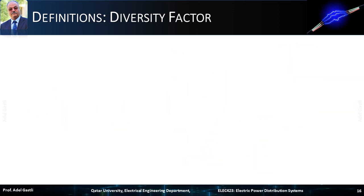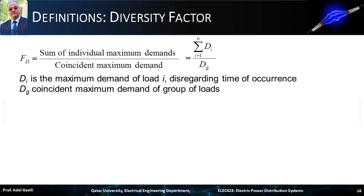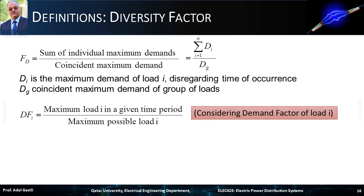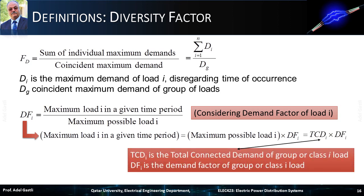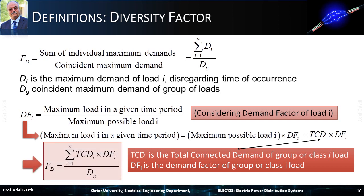In summary, the diversity factor is calculated as the ratio of the sum of individual maximum demands to the coincident maximum demand, where DI is the maximum demand of load I disregarding time of occurrence, and DG is the coincident maximum demand of the group of loads. The demand factor of any load I is the ratio of the maximum load I in a given time period to the maximum possible load I. This leads to expressing the maximum load I as the total connected demand TCDI times the demand factor DFI, allowing the diversity factor to be expressed as a function of the demand factor.